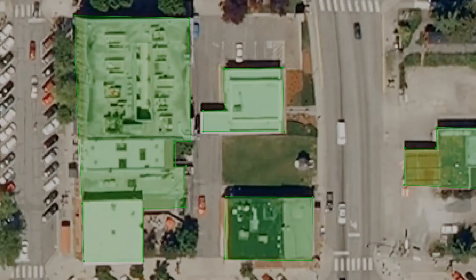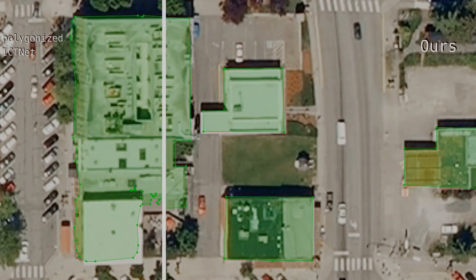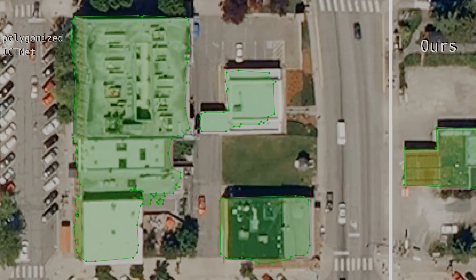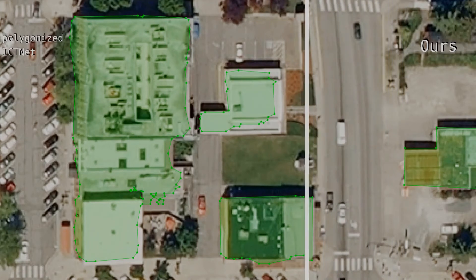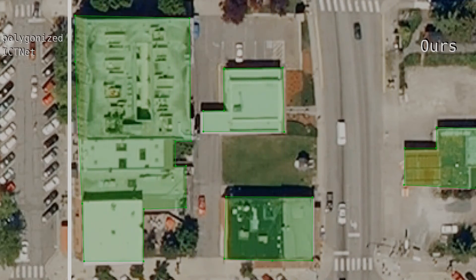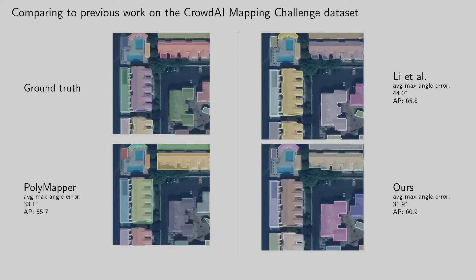This is our polygonization result on the test image. Compared to the simple polygonization of the mask from IC2NET, our segmentation and polygonization pipeline produces much more regular contours. We also compare to previous polygonal building extraction methods on the CrowdAI mapping challenge dataset. The method of Lee and others polygonizes probability maps from the winning entry of the challenge. Polymapper directly outputs polygons with a recurrent neural network approach.